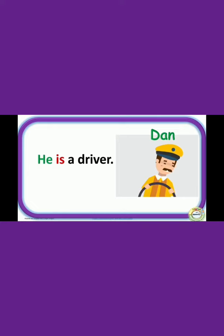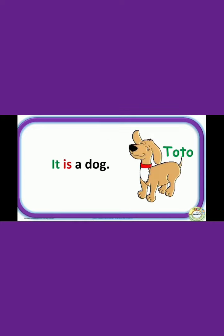Dan — he is a driver. This sentence starts from he, so we use Is with he. Toto — it is a dog. This sentence starts from it, so we use Is with it.